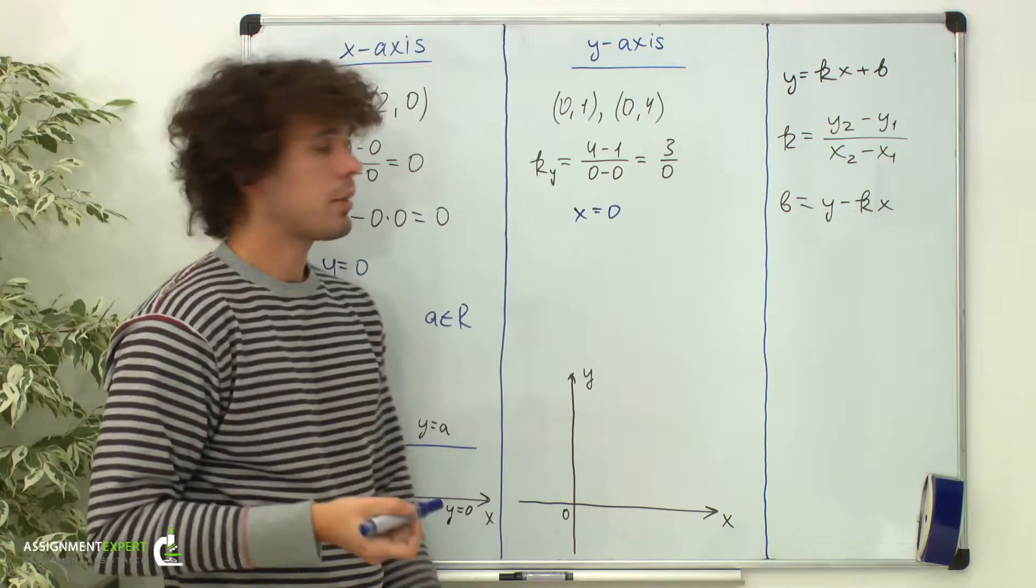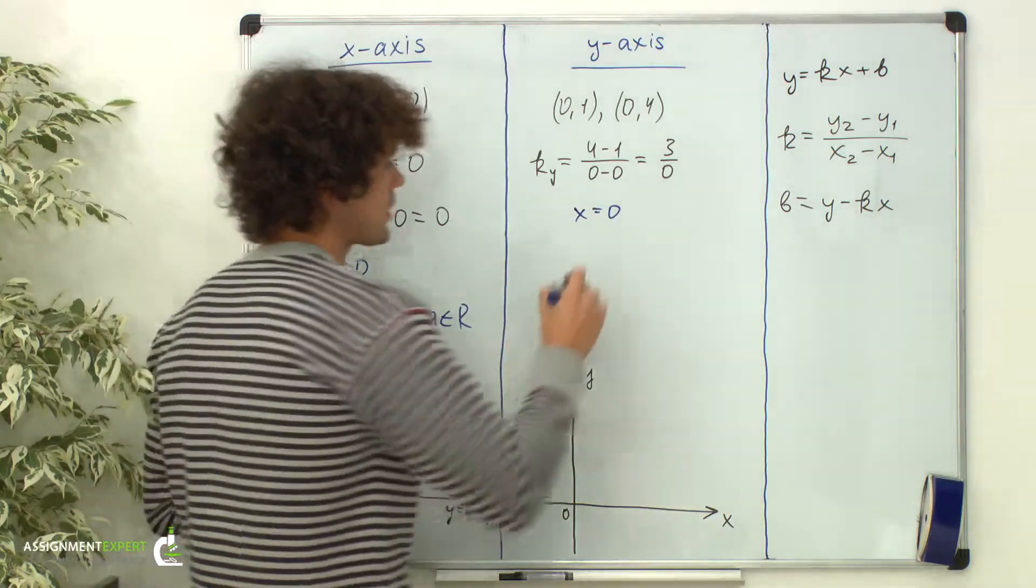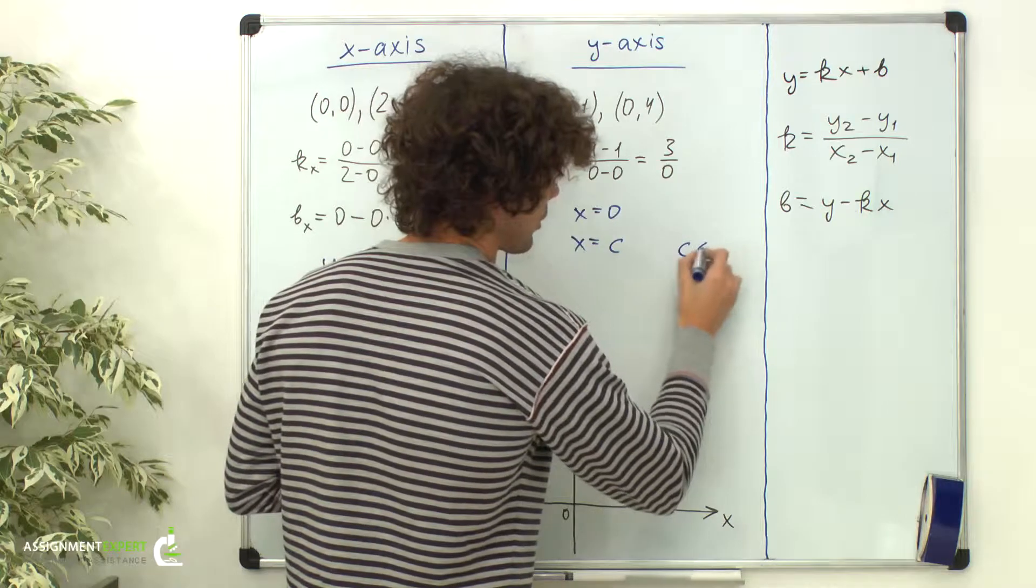The equation of any vertical line parallel to the y-axis is x equals c, where c is a real number.